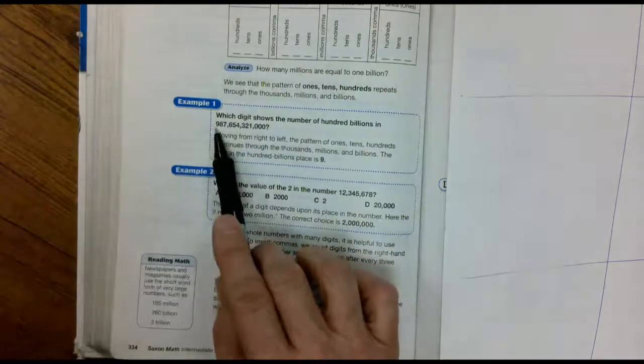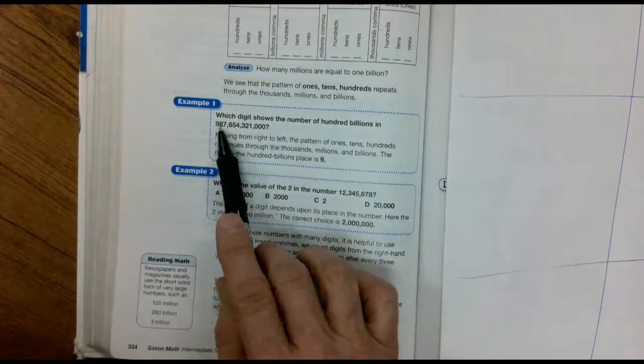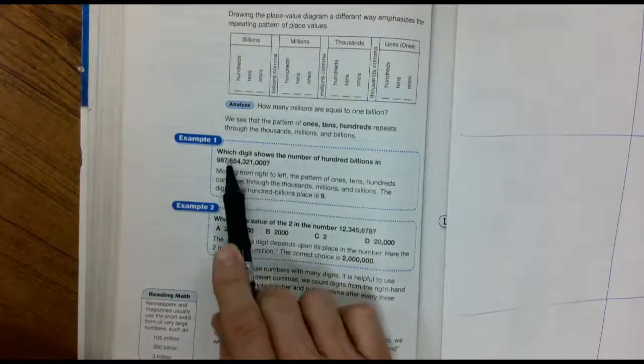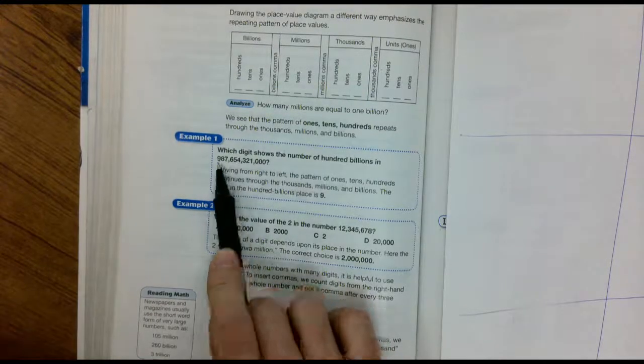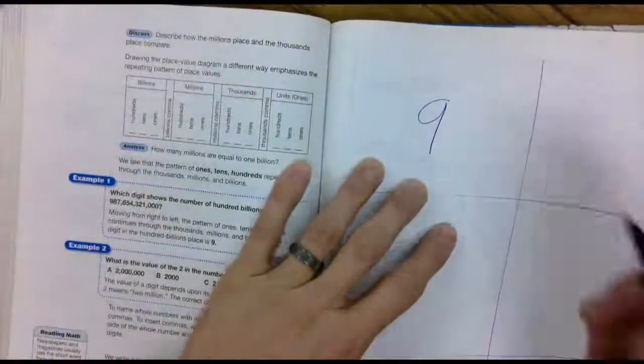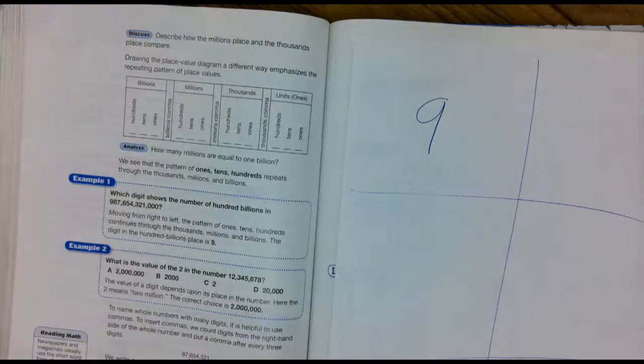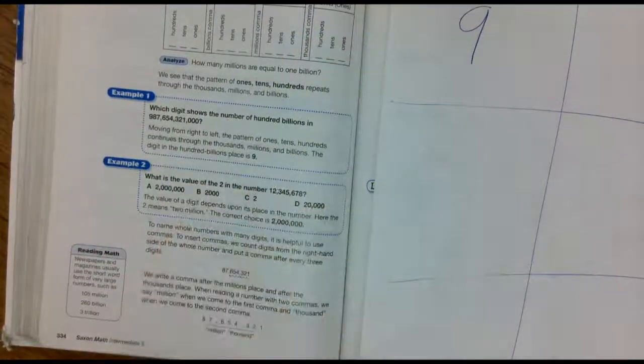That would be the way you would count it. Otherwise, you can just say thousands, millions, billions. One billion, ten billion, hundred billion. Which digit? The nine. I know you guys probably had that way before I taught you all that stuff.